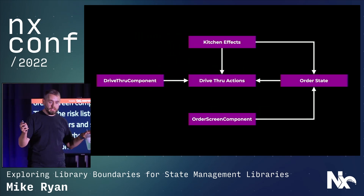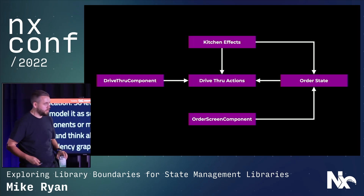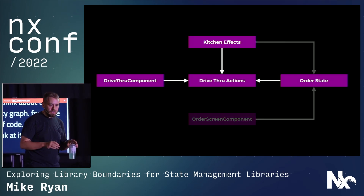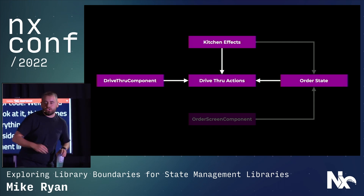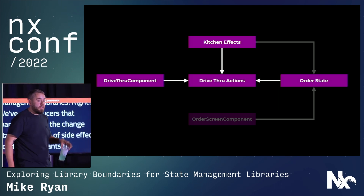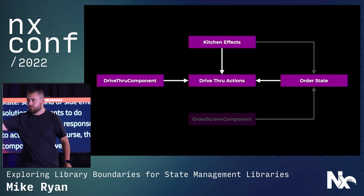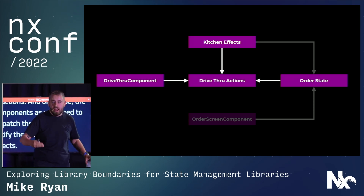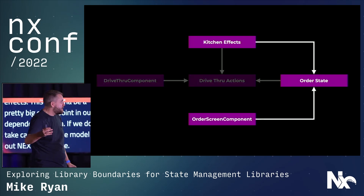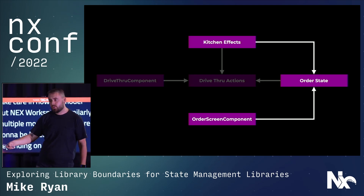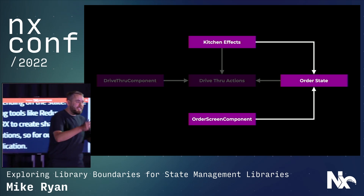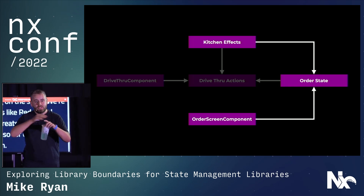Let's take this and model it as components or modules of code and think about the dependency graph for these modules. When you start to look at it, one thing becomes clear: everything depends on actions inside of these state management libraries. We've got reducers that listen to them to change state, a side-effect solution that does work in response to actions, and components that need to dispatch those actions to notify the reducers and effects. This can be a pretty big choke point in our dependency graph if we don't take care in how we model out our NX workspace. Similarly, multiple modules of code are going to be depending on shared state — that's exactly why we're using Redux and NGRX, to create shared state solutions across our entire application.